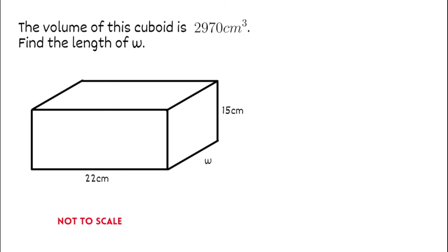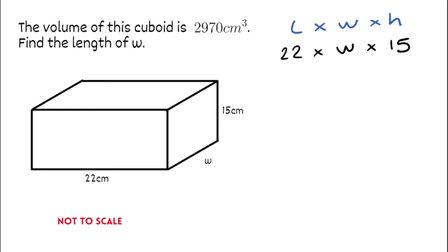We've got a very similar question again. This time the volume of the cuboid is 2,970 centimetres cubed and we need to find the length of w — the width. Referring back to the formula, the volume of a cuboid is length multiplied by width multiplied by height. The length is 22, multiplied by w, multiplied by the height which is 15. Doing 22 multiplied by 15 on the calculator gives 330, so we have 330 multiplied by w equals the volume of this cuboid. We're told the volume is 2,970, so these two things must be equal.